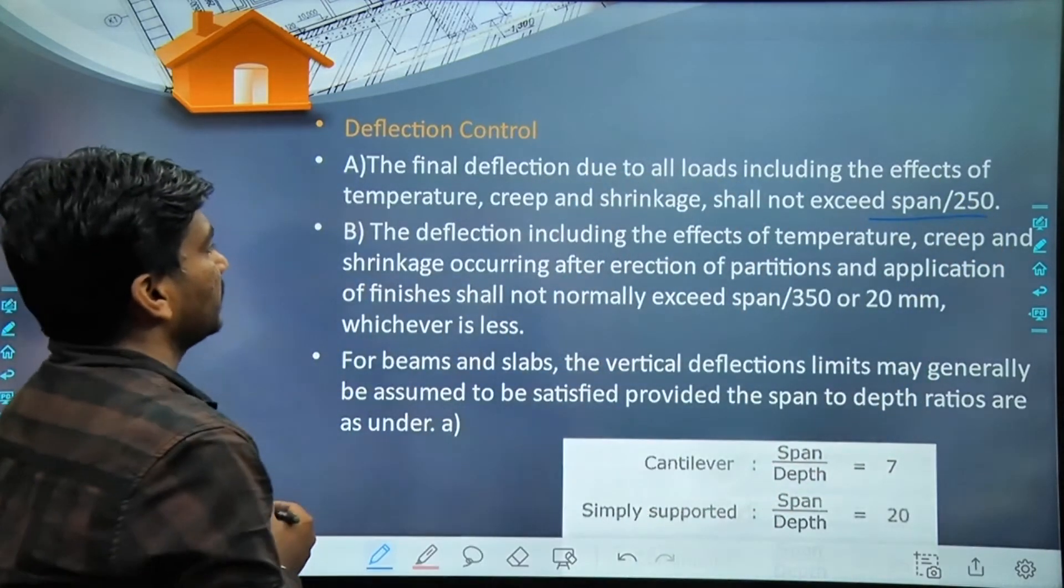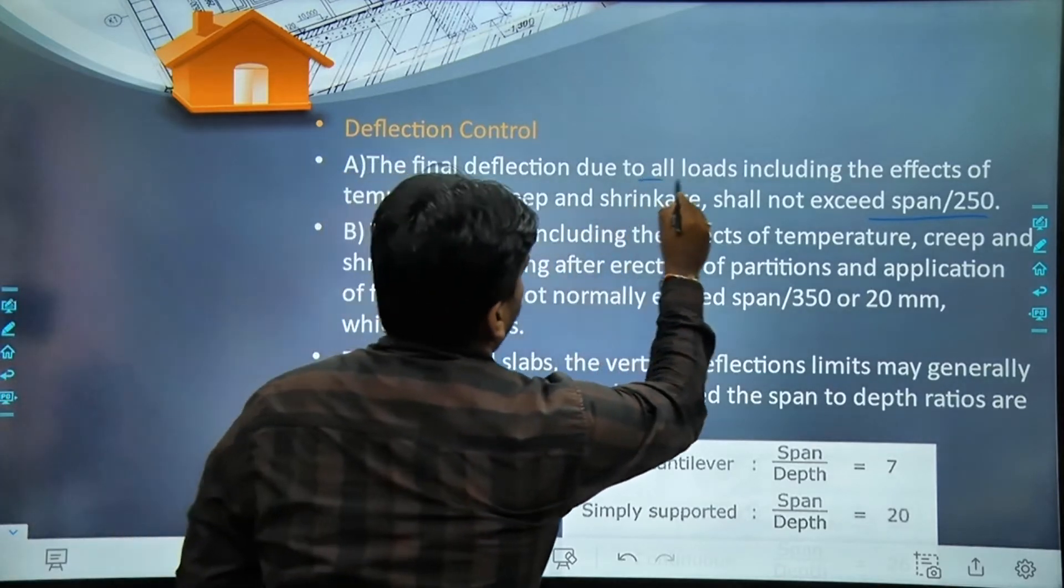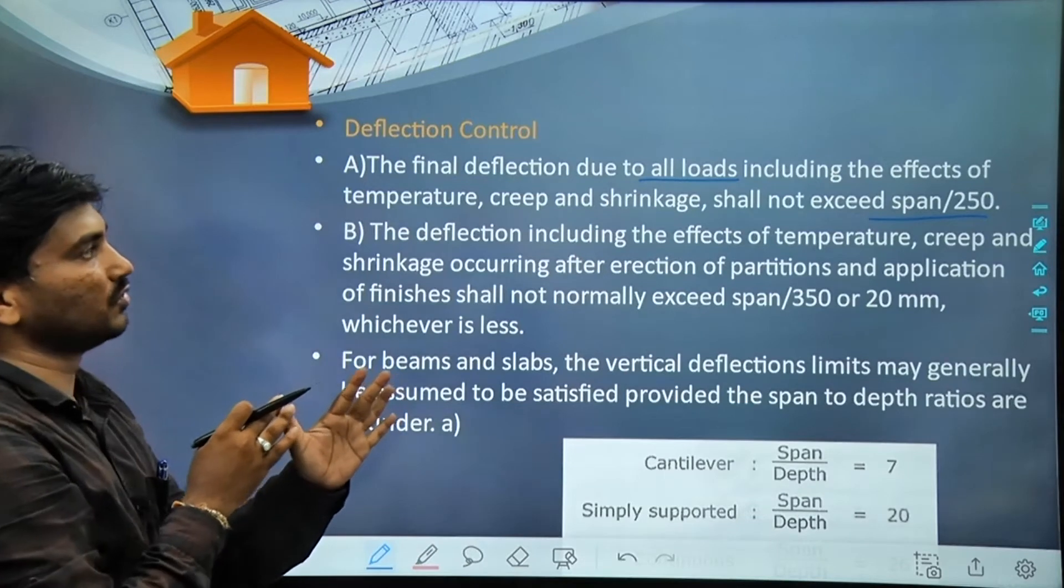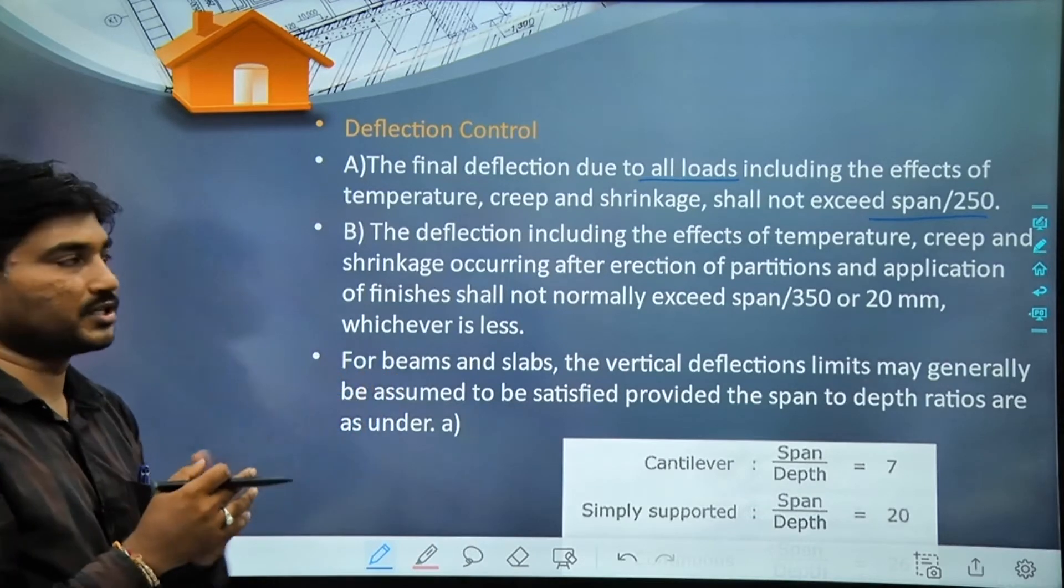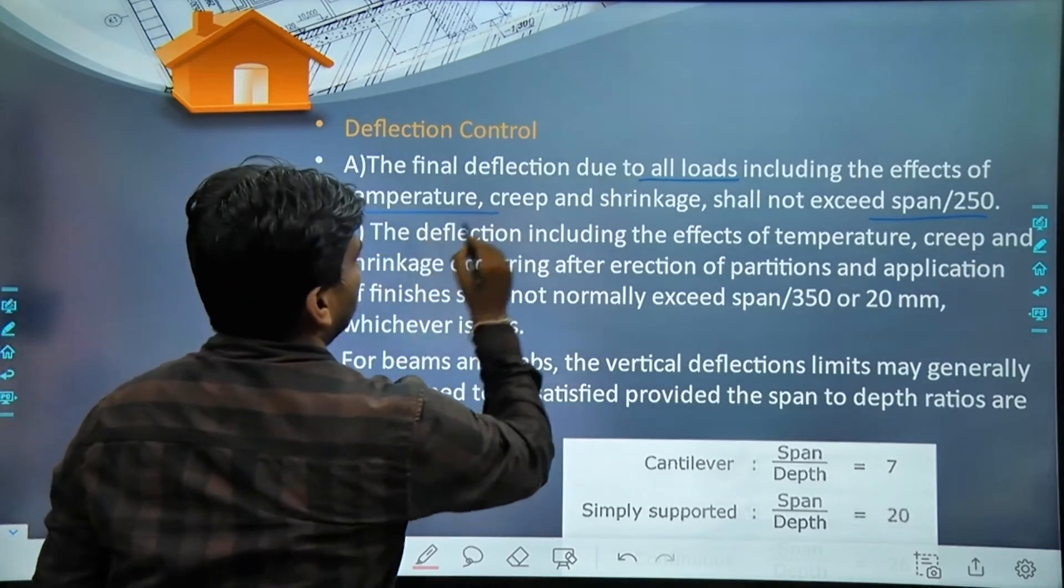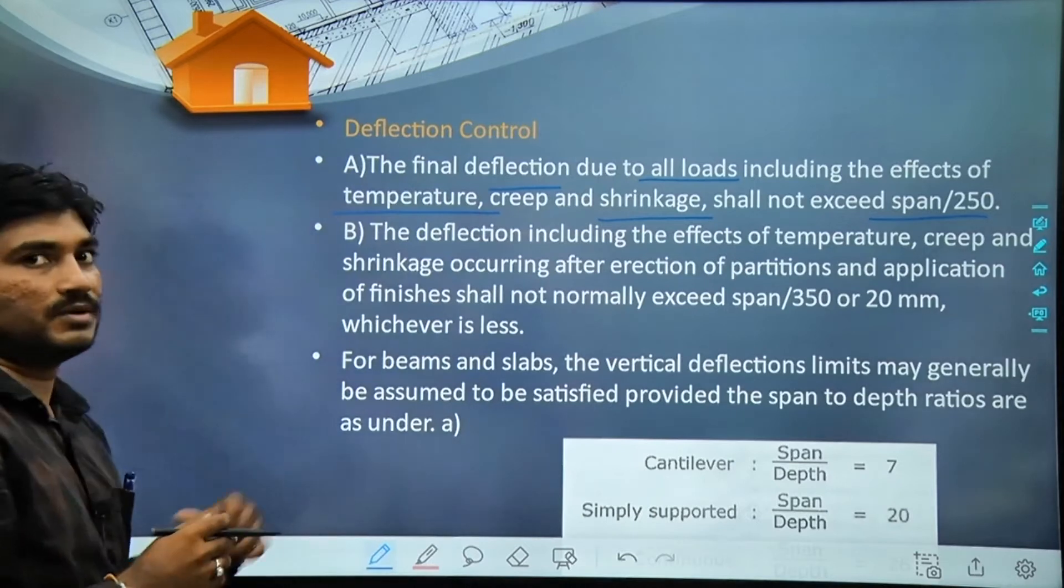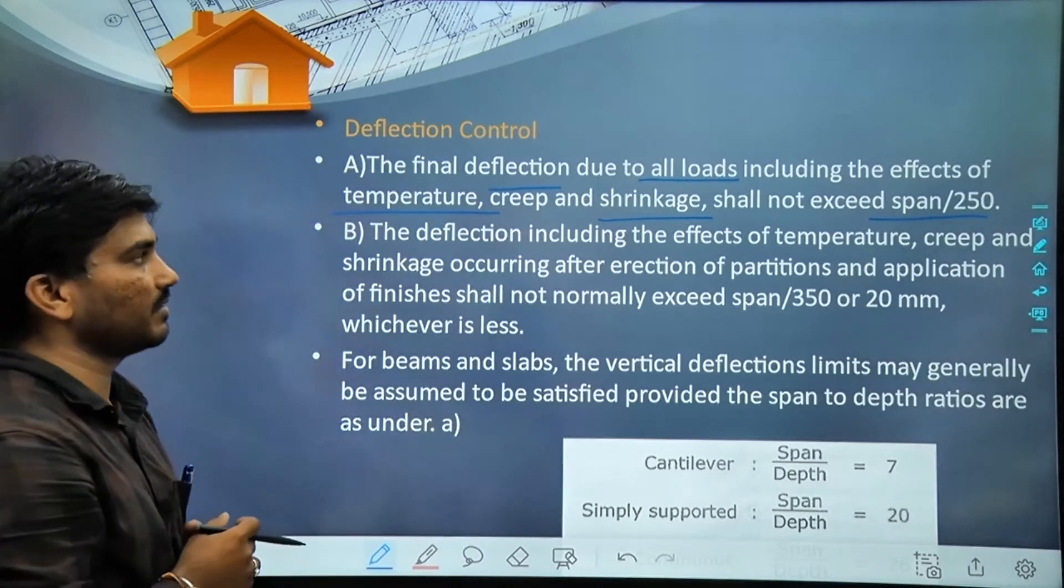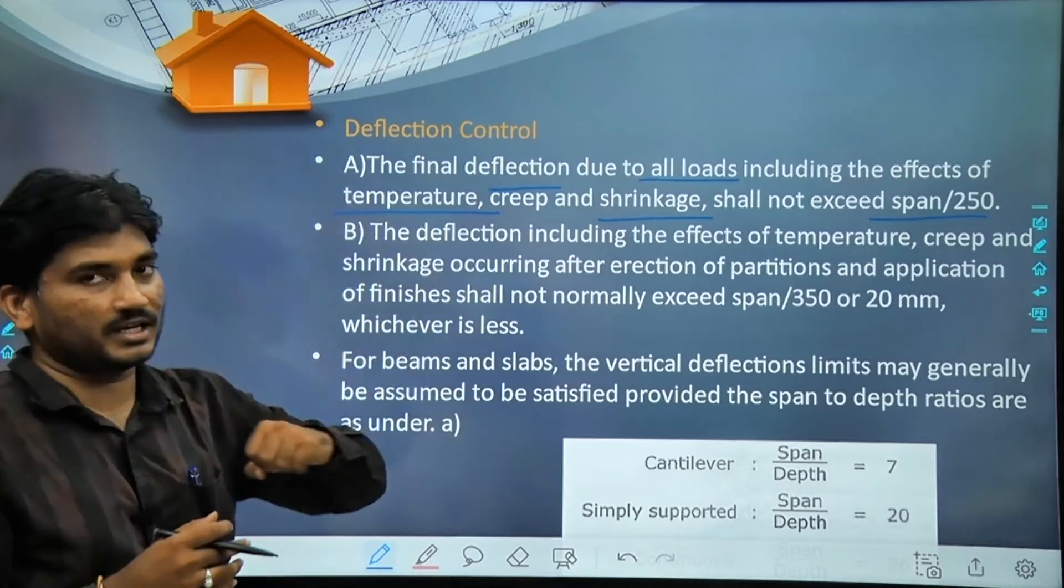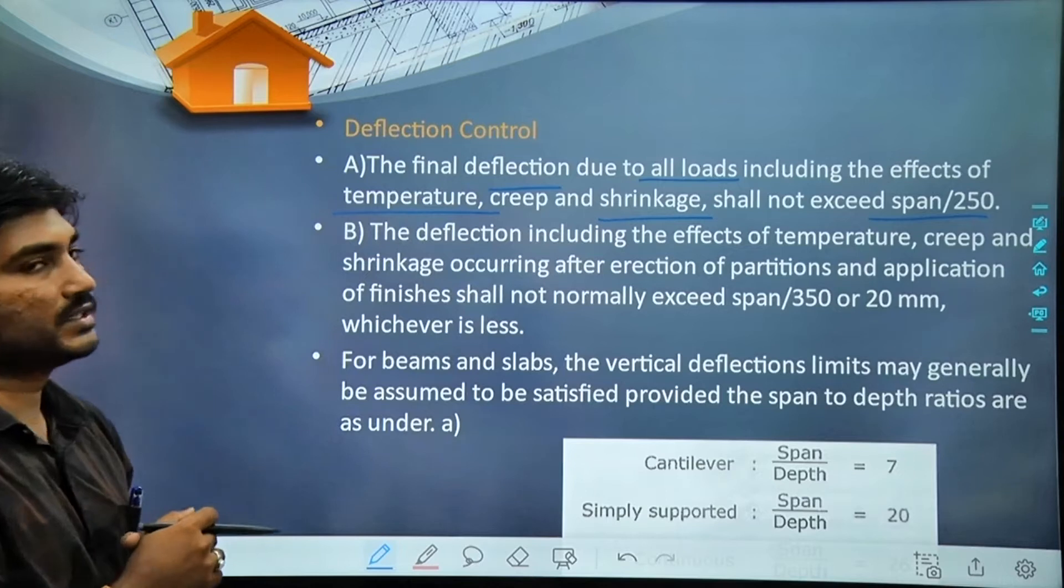What is covered in this? This covers deflection due to all loads - which loads? Dead load, live load, wind load, earthquake load, snow loads, and special loads. Also covered are due to temperature, due to creep, due to shrinkage - all these factors are covered. So after all these factors and all loads come on the structure, maximum deflection should not exceed span by 250.